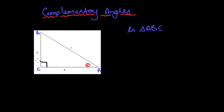Let's say that theta was 30 degrees. What would angle B have the value of? Well, the right angle is 90, so the three angles have to add up to give 180. That means the remaining angle is 180 minus 90, which is 90, so it's 60. They have to add up to give 90 degrees.